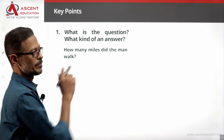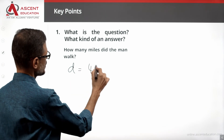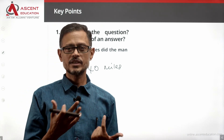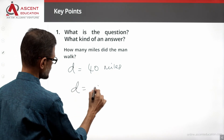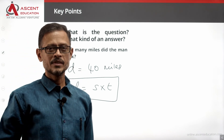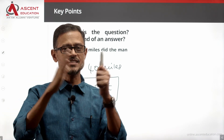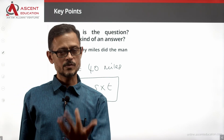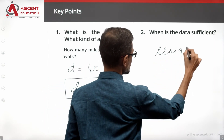How many miles did the man walk? The answer will be a number followed by the unit of distance, which is miles. To find distance, we use the speed-distance-time relationship: distance equals speed multiplied by time. If we know the speed at which the man walked and the time he took, we can compute the distance. The data is sufficient when we have a unique answer.